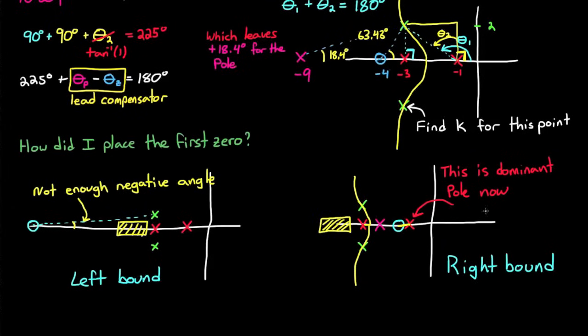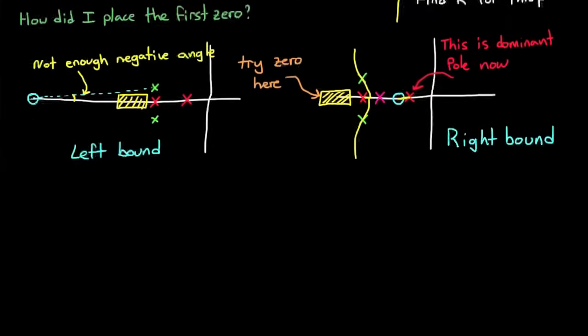So a general rule of thumb is just to place the zero at or to the left of the second real axis open loop pole. This, however, doesn't guarantee that your overshoot requirement will be met. So this is one of the places where some iteration might be required.